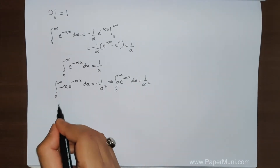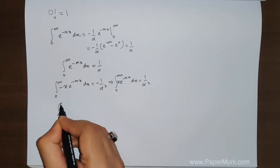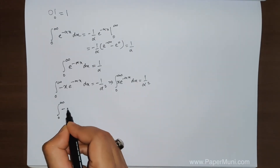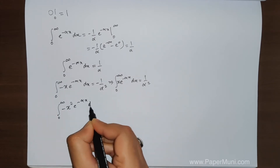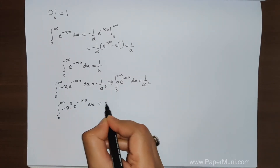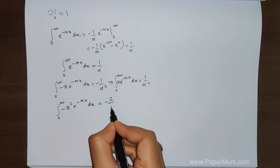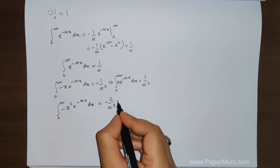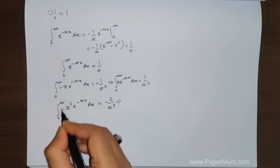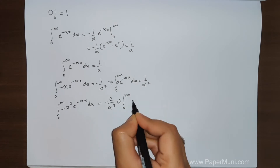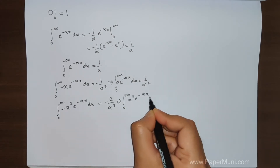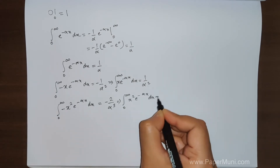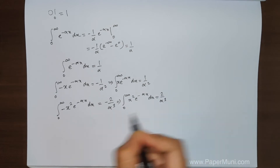We differentiate again with respect to alpha — remember, we are differentiating with respect to alpha, not with respect to x. We get the integral of x squared e to the power minus alpha x dx equals minus 2 over alpha cubed. Removing the negative signs, we get x squared e to the power minus alpha x dx equals 2 over alpha cubed.